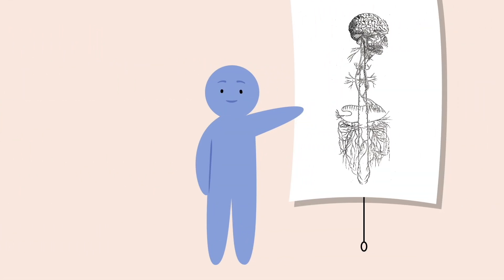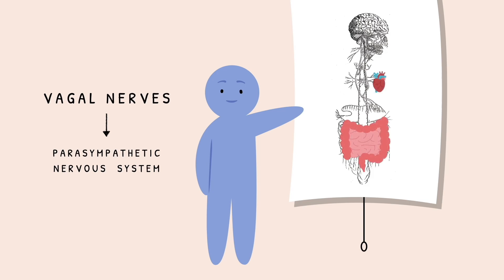Inside your body is a complex bundle of nerves known as the vagal nerves, which are the main nerves of your parasympathetic nervous system. Vagus comes from the Latin for wander, and these nerves really do wander throughout the body, controlling specific bodily functions such as your digestion, heart rate, and immune function.